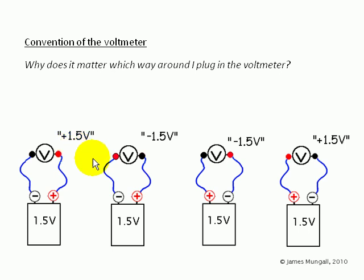However, in this second picture, we've turned round the voltmeter, so the negative from the battery is going to the positive of the voltmeter, and this means that the reading will be negative 1.5 volts.